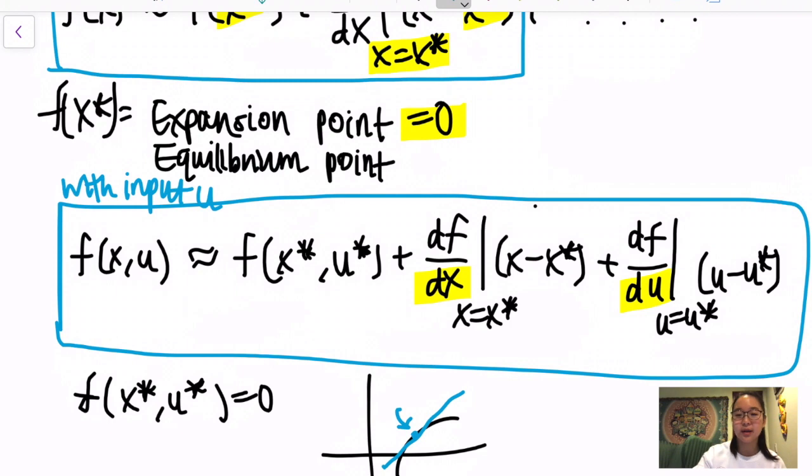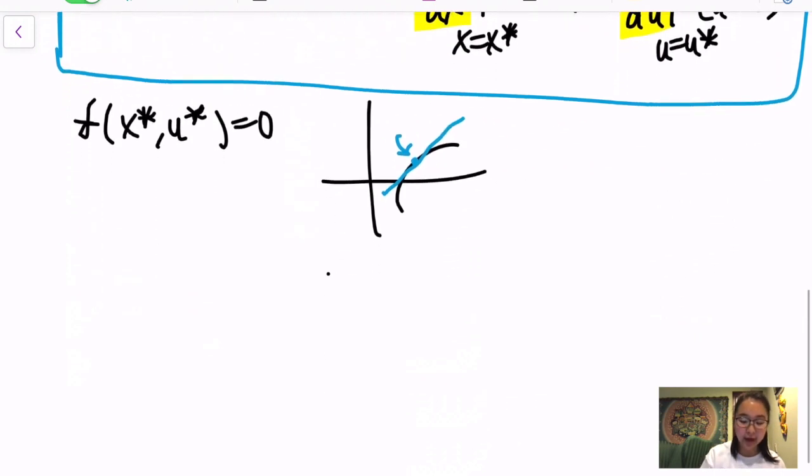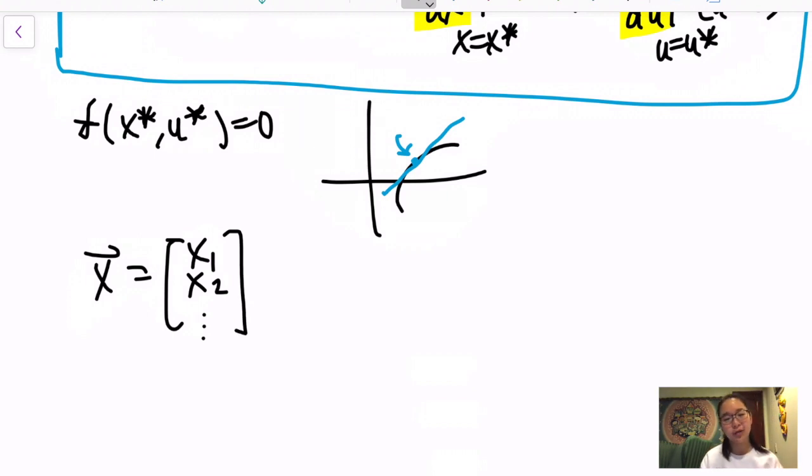We'll also sometimes realize that our state space representation usually has more than just one x. Usually instead we have a vector where we have x1, x2, and so on. So how do we get linearized in that case? We realized that we can do the same thing and have the same type of format for f1, f2, f3, and so on. We actually just end up taking all of these derivatives or partial derivatives and combining them.